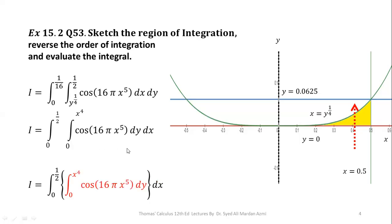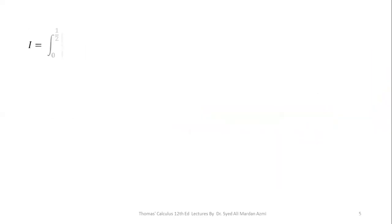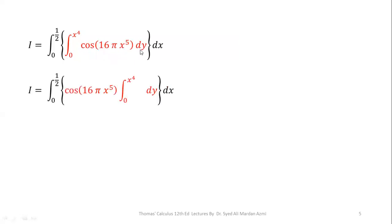In order to evaluate this integral, we will separate our inner and outer variable with the help of brackets. We will always solve the inner variable first, and then apply the outer integral to the outcomes. I have isolated the inner integral and changed its color to stay focused. With respect to y, cos(16π x^5) is constant, so we can take it outside the inner integral, leaving only dy. Integration of dy gives y, evaluated for limits 0 to x^4. Applying the fundamental theorem of calculus, upper limit minus lower limit.